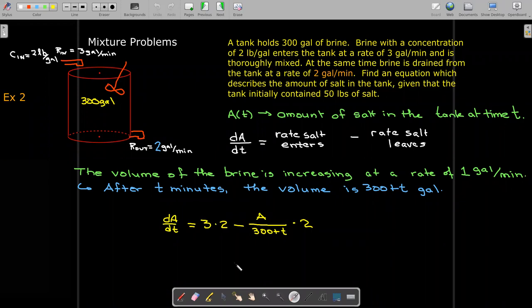So the amount of salt or the rate at which the salt enters the tank has not changed. But now we're pumping out 2 gallons per minute. And the concentration is going to be the amount that we have divided by the volume. But now the volume depends on t.